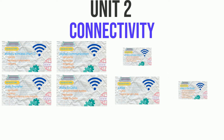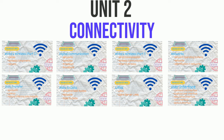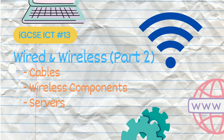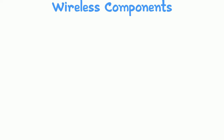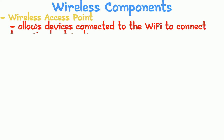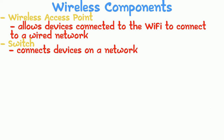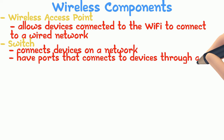We also got requests for components of wireless systems. A wireless access point allows devices connected to Wi-Fi to connect to a wired network. Wireless access points can be found built into routers or as standalone devices. A switch connects devices on a network through cable ports. A smarter setup would be to connect a wireless access point to a switch to allow wireless access.